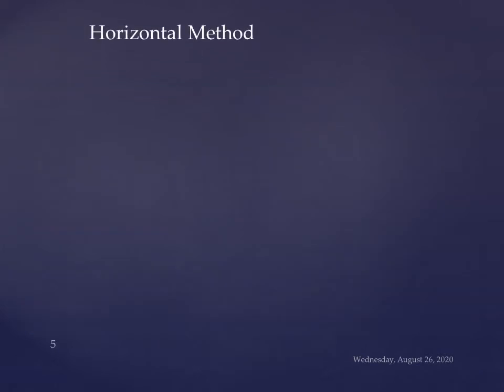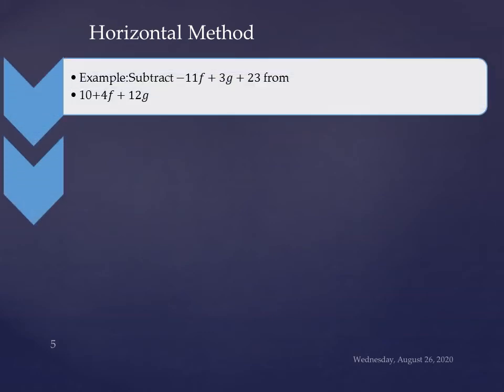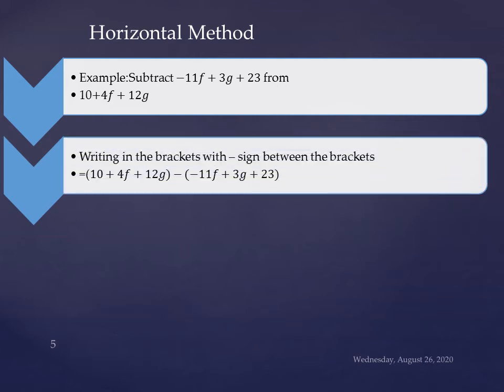Now horizontal method of algebraic expression for subtraction. Example is subtract minus 11f plus 3g plus 23 from 10 plus 4f plus 12g. Writing in the brackets with the minus sign between the brackets. First bracket will be of 10 plus 4f plus 12g. From के बाद वाला expression हम usko पहले लिखेंगे. After that minus. And second bracket is of minus 11f plus 3g plus 23.